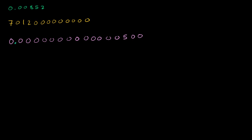There's a decimal right there on that number. The next number I'm going to do is 723. And then let's do 0.6. And then one more just to make sure we've covered all our bases — let's do 823 and then throw an arbitrary number of zeros there.